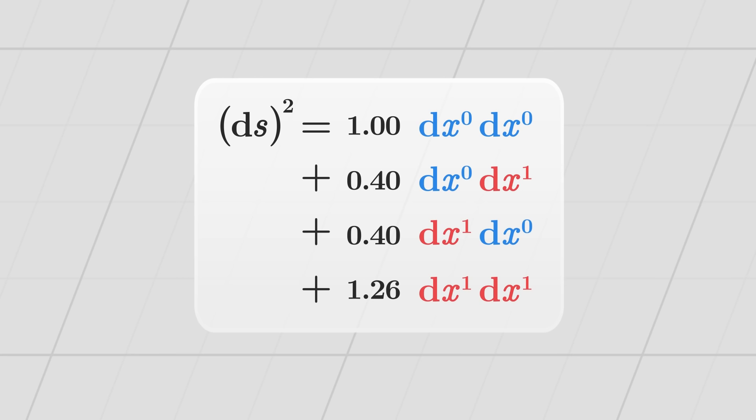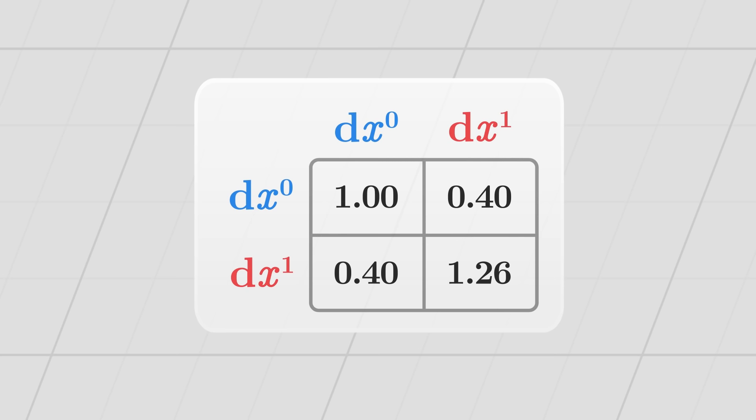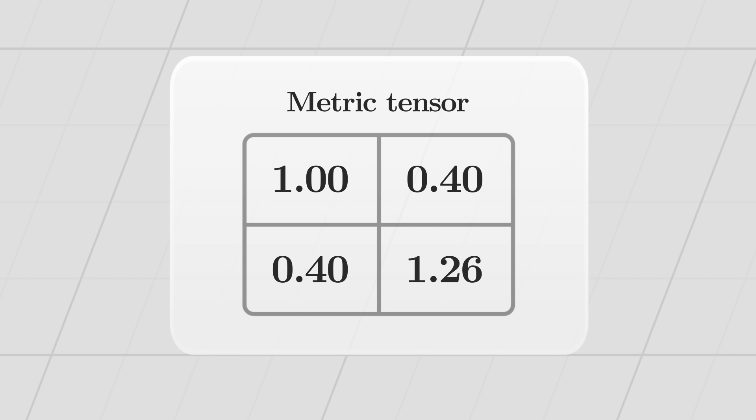All these coefficients which multiply each combination can be brought together in a table, with one row and one column for each coordinate. We call this object the metric tensor. It is represented as a table whose components allow us to calculate small distances.